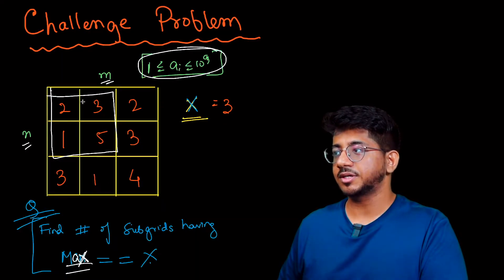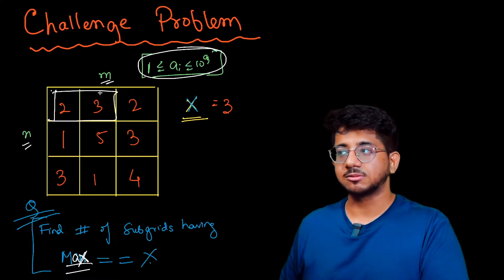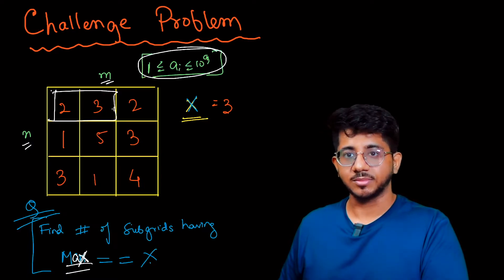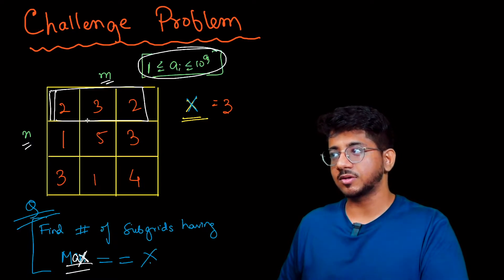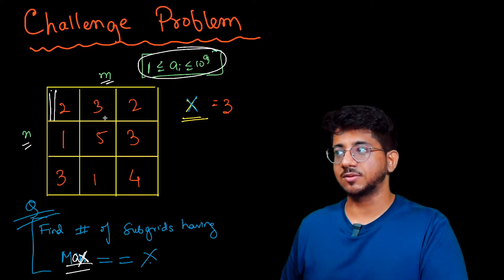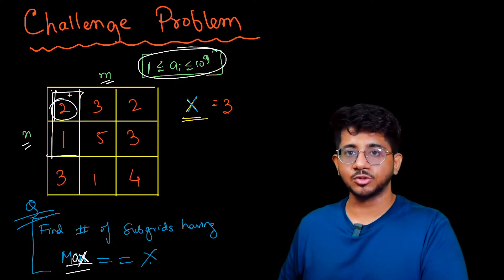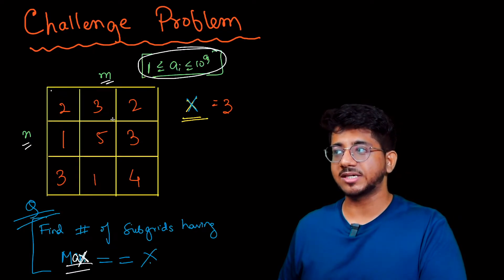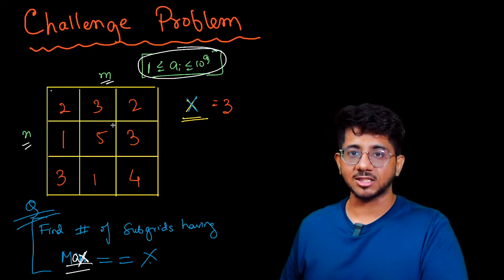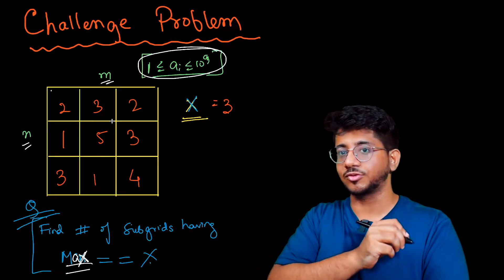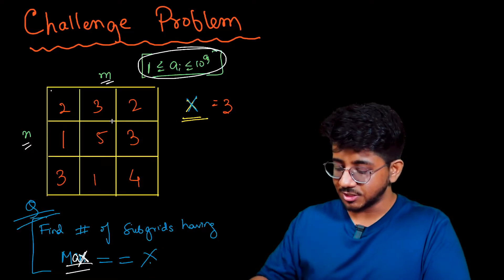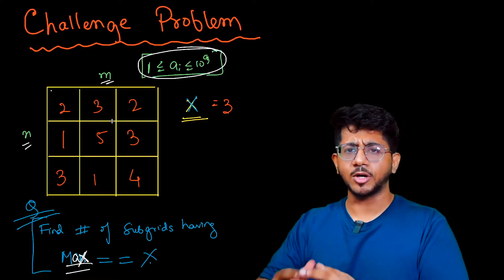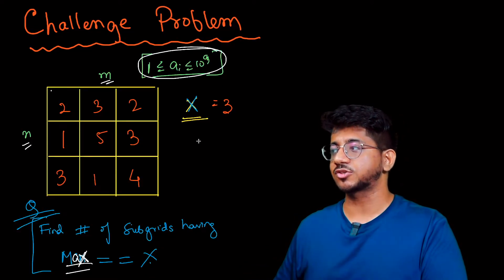If you think about this particular grid, the maximum is equal to 3. If you think about this particular subgrid, the maximum is equal to 3. If you think about this particular subgrid, the maximum is equal to 2, so this will not be counted. You have to find how many subgrids exist which have maximum exactly equal to 3. It's a pretty beautiful problem.